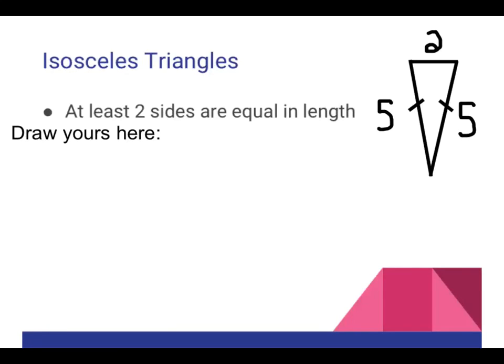An isosceles triangle has at least two sides that are equal in length. Edit this slide to draw your own isosceles triangle. Remember that a triangle has three sides, and to make it isosceles, two of these sides must be equal in length.